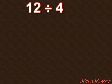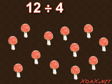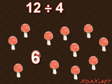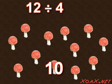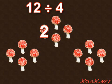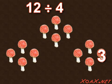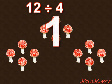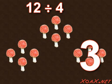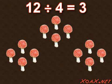For our next example, we look at twelve divided by four. So we begin with twelve toadstools: one, two, three, four, five, six, seven, eight, nine, ten, eleven, twelve. Then we break them into groups of four: one, two, three, four; one, two, three, four; one, two, three, four. Then count these groups to get the answer: one, two, three. There are three groups of four, so twelve divided by four equals three.